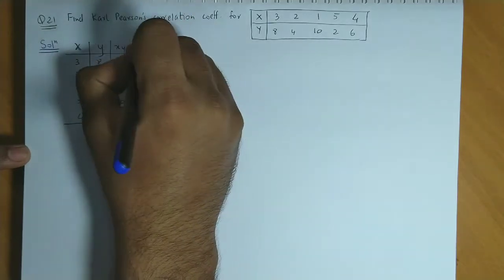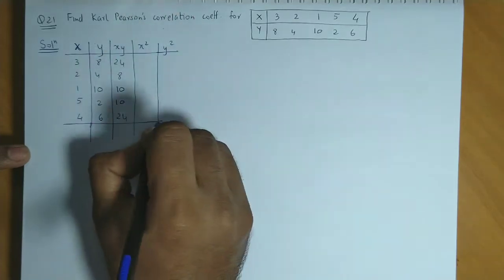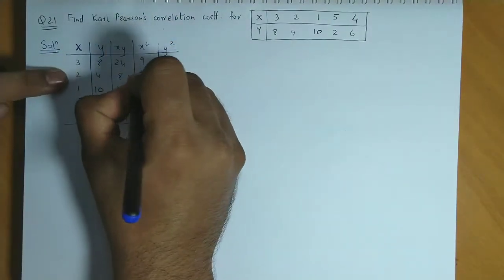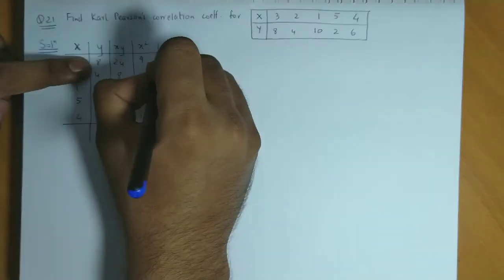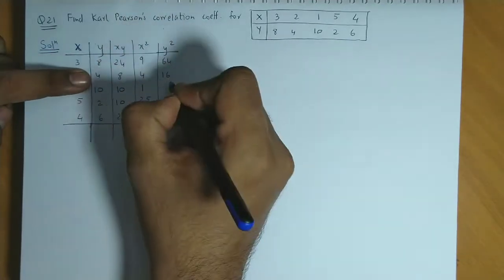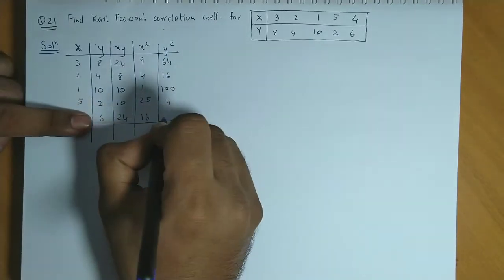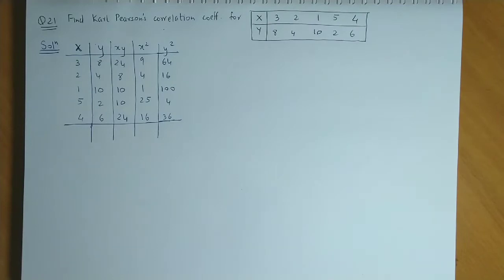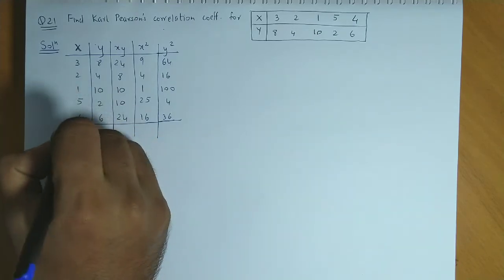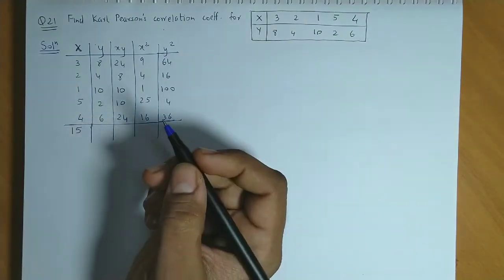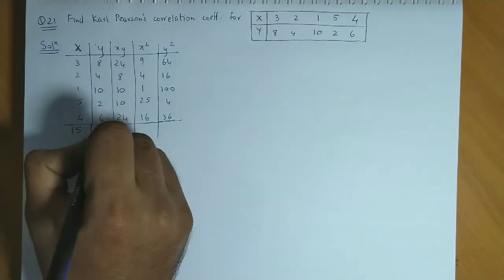The next column would be x-square, and the last column which we require is y-square. So x-square would be 9, 4, 1, 25, 16. And y-square would be 64, 16, 100, 4, and 36.